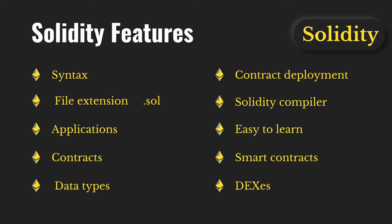Now let's talk about the important features of Solidity — why we should use it and what kind of programs we can build. First, syntax: if you have coded in JavaScript you will have the same infrastructure, same patterns, and same syntax to write a Solidity smart contract. Second, file extension: every programming language has its own extension — for Solidity it is .sol.